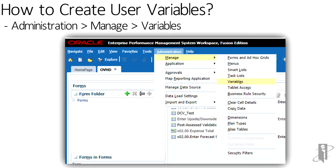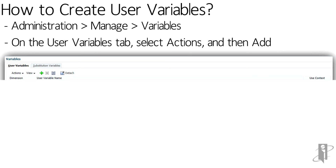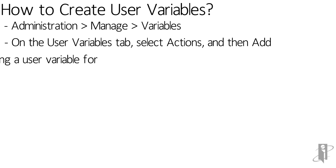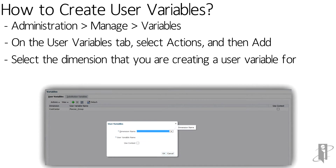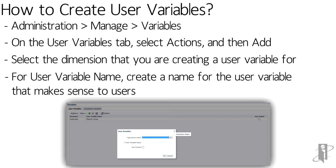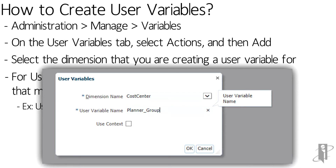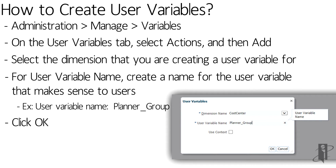The default tab that shows up is the User Variables tab. Here, you will select Actions and then Add, or the green plus sign, to add a new user variable. You will select the dimension that you are looking to create the user variable for, and then create a name that will make sense to users and inform them what type of variable they're changing. For example, a user variable name that switches between planner groups is planner_group. Select OK and you have just created your first user variable.